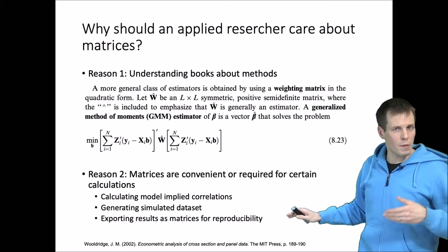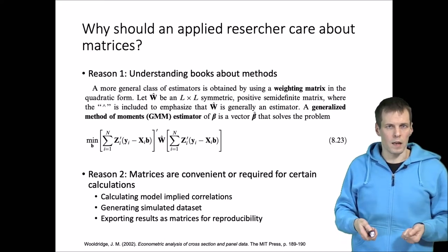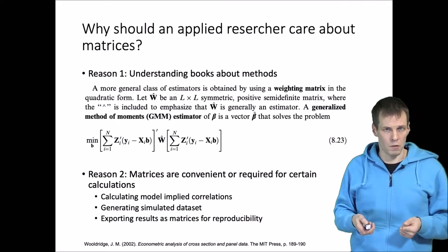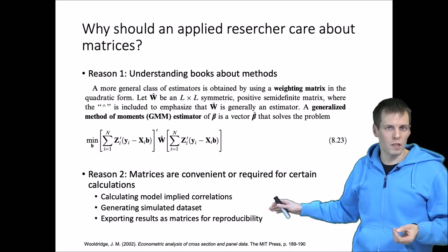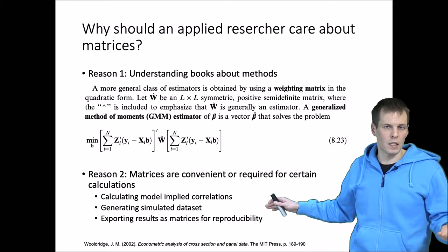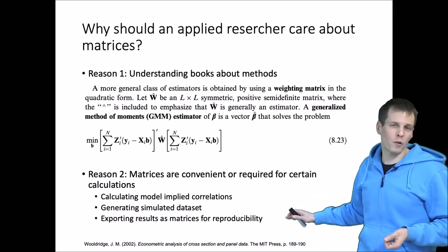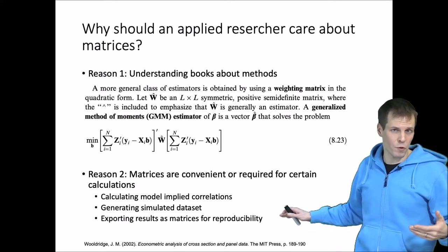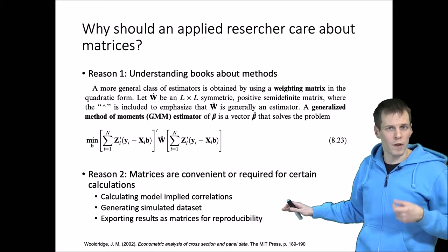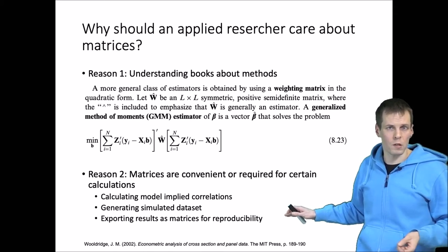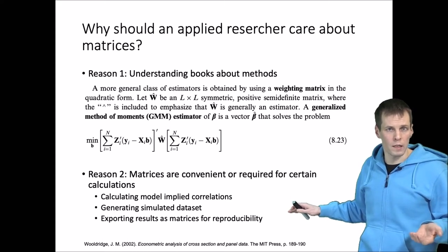The second reason is that sometimes being able to do simple calculations with matrices is useful. For example, if you want to calculate the model-implied covariance and your software does not provide it, you can just multiply matrices together to get that covariance matrix. Also, understanding matrices can be useful if you need to convince reviewers that your analysis is not sensitive to violations of some assumptions, such as when doing a small simulation study. Finally, putting matrices together or taking sums of matrices is useful when exporting results from statistical software for reproducibility — exporting should always be done programmatically rather than by copy-paste.